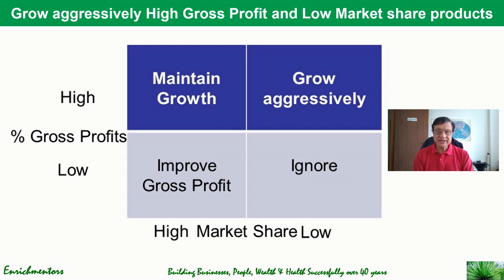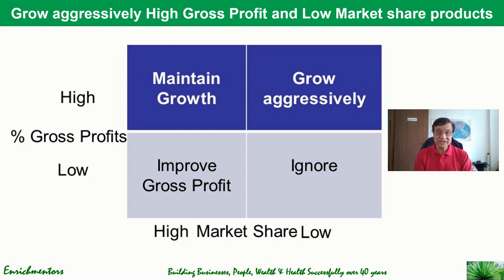The second category for growth is high gross profit products where you already have high market share — here you need to maintain current growth. Products with low gross profits and low market share are best ignored. Products with low gross profits but high market share require a focus on improving gross profit so they start contributing better to your area's profitability.